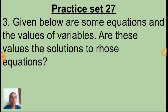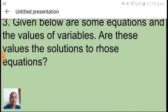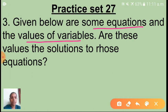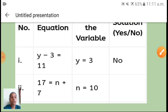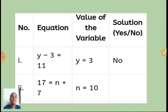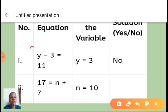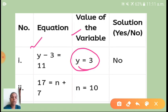The third question: given below are some equations and the values of variables. A tabular column is there in your textbook — in that you will get some equations and the values of variables. We have to find whether those values of variables are the solutions to these equations. If the value is correct, you have to write yes; otherwise, write no.